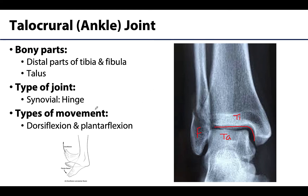These bones articulate to form a hinge joint. The primary movements that occur here are dorsiflexion and plantarflexion, which are basically flexion and extension with some important considerations in how we describe them. Dorsiflexion has the heel grounding to the floor with the toes pointing up, whereas plantarflexion has the heel up in the air with the toes planted on the ground. Other joints in the region also play a role, but right at this joint you have either dorsiflexion or plantarflexion.